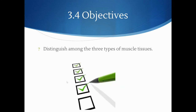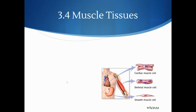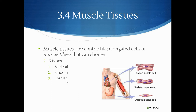Section 3.4 has one objective: distinguish among the three types of muscle tissues. Muscle tissue is only contractile — it has elongated cells or muscle fibers that can shorten. Skeletal muscle is the type you have voluntary control over: moving your hands, walking, making facial expressions. Smooth muscle is involuntary. Cardiac muscle is specific to the heart, which is a large muscle composed entirely of cardiac tissue.